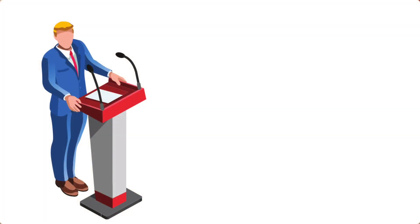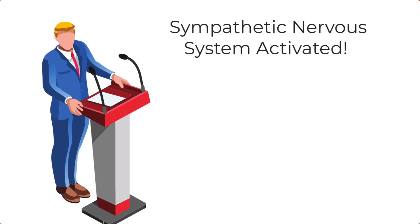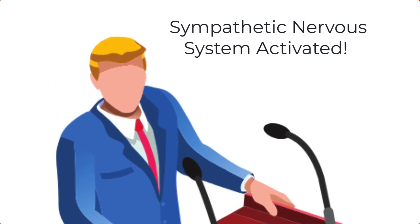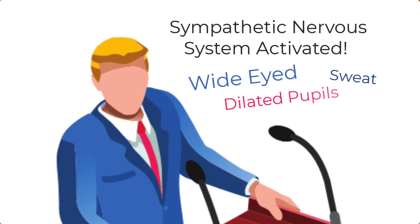Imagine that Donald is giving a speech and he's terrified, because public speaking is terrifying at the best of times. His sympathetic nervous system is activated. When your sympathetic nervous system is activated, we would expect sweat pouring down his face on both sides, and a wide-eyed look with dilated pupils. That is the expected facial features of an activated sympathetic nervous system. But that's not what's going on with Donald.